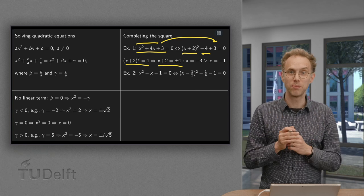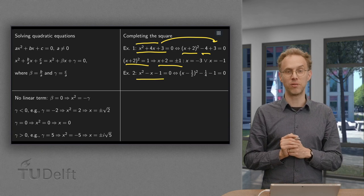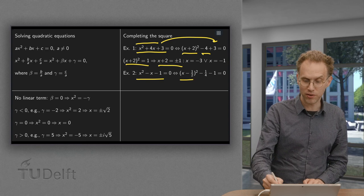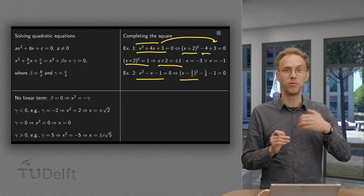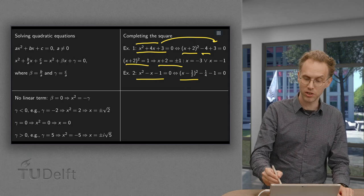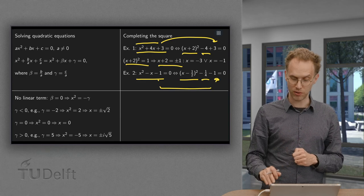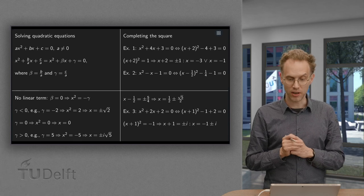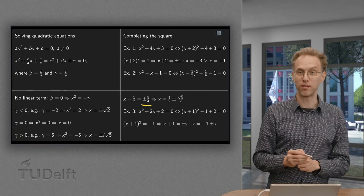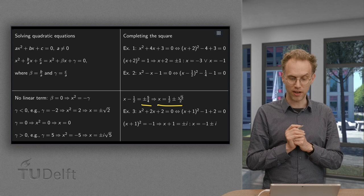Now let us look at an example with less nice numbers: x squared minus x minus 1 equals 0. For x squared minus x we use x minus one-half squared. Computing x minus one-half squared gives x squared minus x plus one-quarter, so we subtract the one-quarter and copy the minus 1. We get x minus one-half squared equals 5 over 4, so x minus one-half equals plus or minus the square root of 5 over 4, giving x equals one-half plus or minus the square root of 5 divided by 2.